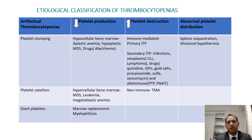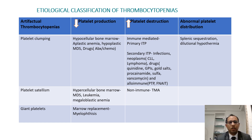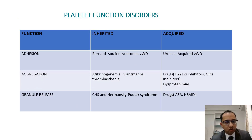Classification of thrombocytopenia involves two main categories: pseudothrombocytopenia and true thrombocytopenia. Pseudothrombocytopenia means the platelet count is actually normal but reads low — due to platelet satellitism, giant platelets, or platelet clumping. You need to rule this out by changing the anticoagulant or performing a peripheral smear. True thrombocytopenia can result from decreased platelet production, increased platelet destruction, or abnormal platelet distribution.